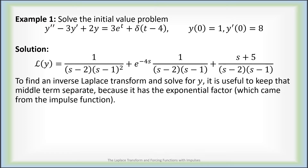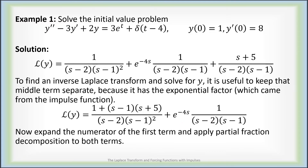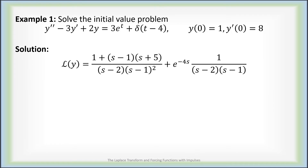To find an inverse Laplace transform and solve for y, it's useful to keep the middle term separate — it has this exponential factor, while the other two terms do not. We're going to combine those two into a single rational function. Our common denominator between those two terms is (s minus 2)(s minus 1) squared, giving us numerator 1 plus (s plus 5) times an extra factor of (s minus 1). Here is the exponential e to the minus 4s times a different rational function. Now we apply partial fraction decomposition to both terms.